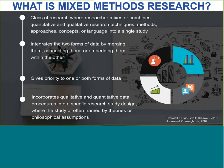So what exactly is mixed methods research? It's defined as a class of research where the researcher mixes or combines quantitative and qualitative research techniques, methods, approaches, concepts, or language into a single study. It integrates the two forms of data by merging them, connecting them, or embedding them within the other. It also gives priority to one or both forms of data. And finally, mixed methods research incorporates qualitative and quantitative data procedures into a specific research study design, where the study is often framed by theories or philosophical assumptions.